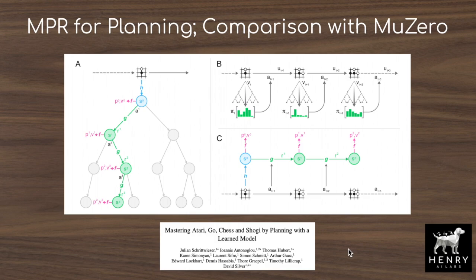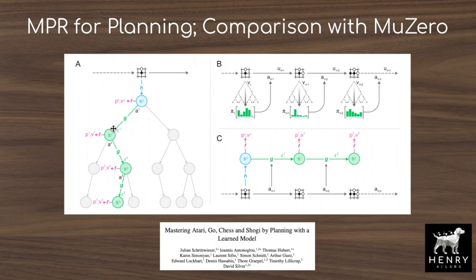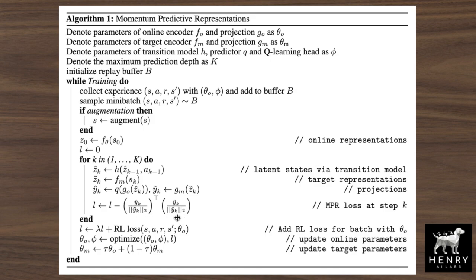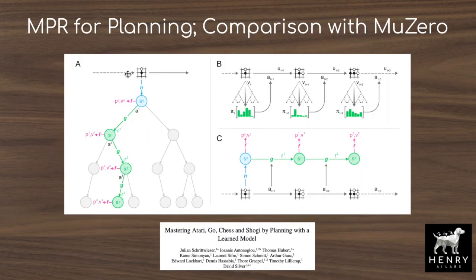The authors hint at interesting future work: using this dynamics model for Monte Carlo Tree Search (MCTS) planning, similar to MuZero. In MuZero, a latent-space dynamics model predicts transitions from state-action pairs into the next state, enabling planning via MCTS — rolling out simulations by expanding the latent-space prediction tree and evaluating leaf node values for better immediate action selection. Even though MPR's latent dynamics model is trained for consistency rather than exact prediction, it may still be usable for this kind of MCTS planning.